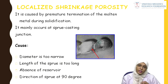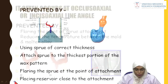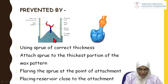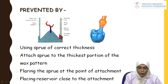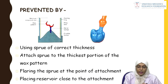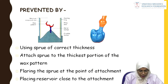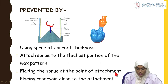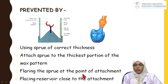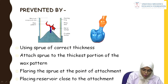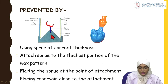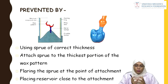How the sprue is placed is very important in preventing localized shrinkage porosity. The sprue must be attached to the thickest portion of the wax pattern at a 45-degree angle. There must be a minimum distance of 6 mm from the top of the casting ring to where the wax pattern ends. The sprue should be flared at the point of attachment, and if possible a reservoir should be placed close to the attachment, so that when the metal shrinks, molten metal from the reservoir compensates for that shrinkage.